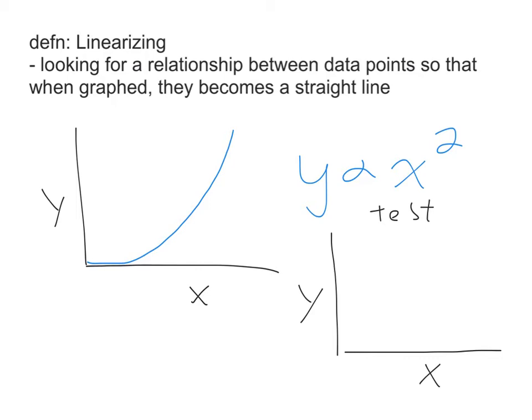If it's not a top opening parabola, then you would get something that's not a straight line and you would have to either try a different relationship or linearize again. There are four main types of graphs that we'll see this year. I'm going to go through all four, the relationship between the x and the y variables and what you would have to do to linearize.